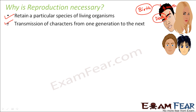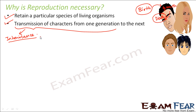Another reason is the transmission of characters from one generation to the next. We all have similarities to our parents, and even to our grandparents. It is because of the process of reproduction that characteristics and traits are carried from one generation to the next. For example, in many families, the grandfather has curly hair, his son also has curly hair, the grandson also has curly hair — curly hair is a trait being carried from one generation to the next. This is what we call inheritance, and inheritance exists due to reproduction.